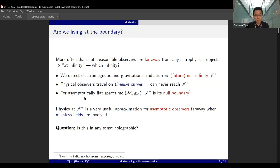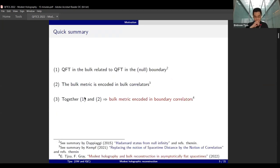The quick summary that we are sending as a punchline is that, first, the first two points are already known in the literature: there is a sense in which the QFT in the bulk can be related to QFT in the null boundary, and the bulk metric is also encoded in the bulk correlators. We are going to propose a simple extension by showing that you can use these two together and encode into the boundary correlators all the geometric information in the bulk.